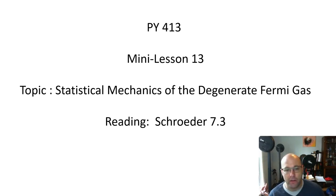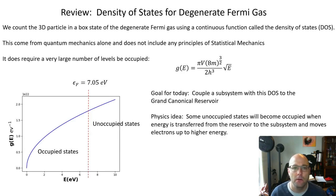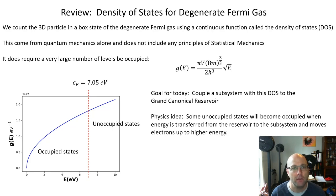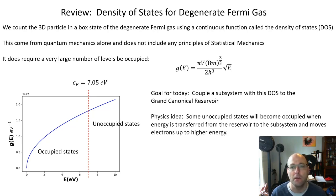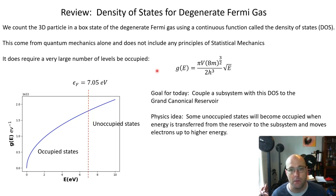We're still in section 7.3 of Schroeder, which is a very long section. In the previous mini lesson we talked about just the quantum mechanics of the degenerate Fermi gas, and now we're going to add the statistical mechanics. We modeled the degenerate Fermi gas — for example, the conduction electrons in a metal — as an ideal gas of fermions, solved the 3D particle in a box, and described the states via a density of states. The density of states grows with energy as the square root of energy, shown as the blue curve.